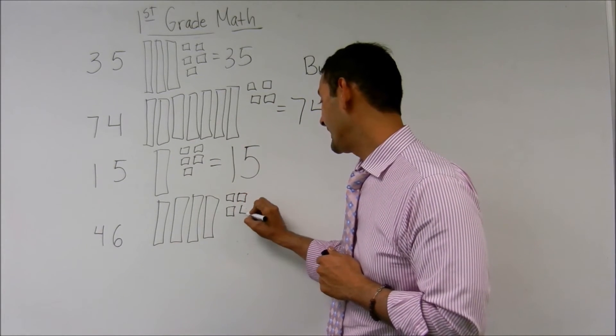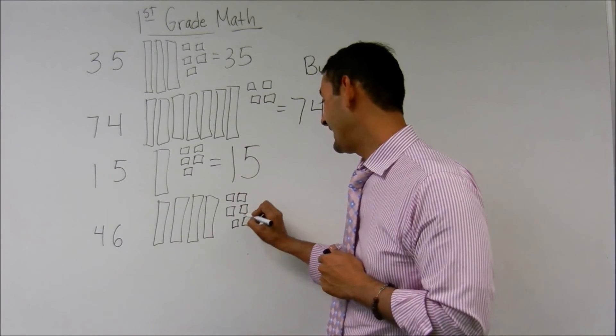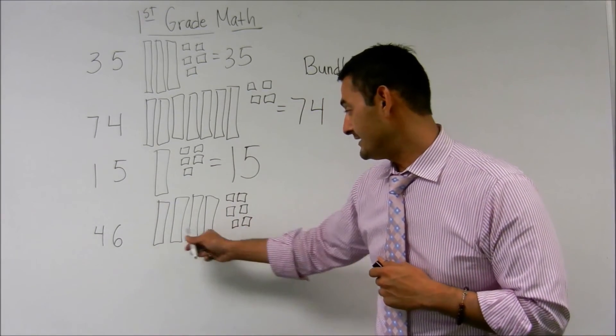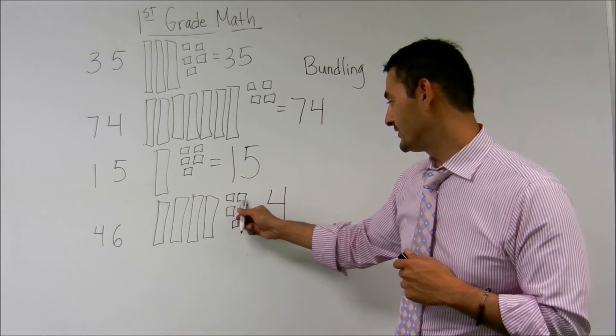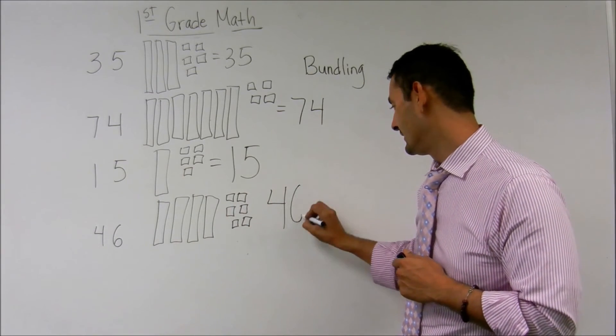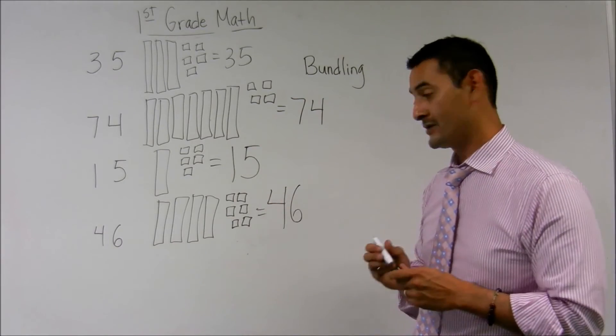One, two, three, four, five, and six. Four tenths. One, two, three, four. Six ones. One, two, three, four, five, six equals forty-six.